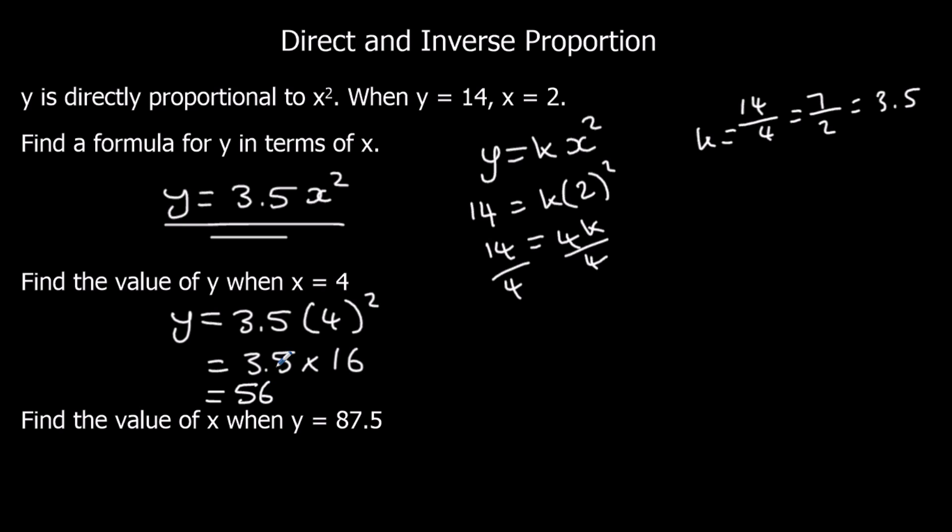Find the value of x when y equals 87.5. So 87.5 equals 3.5x squared. Divide both sides by 3.5. So we've got 87.5 over 3.5. If we double it, we've got 175 over 7.